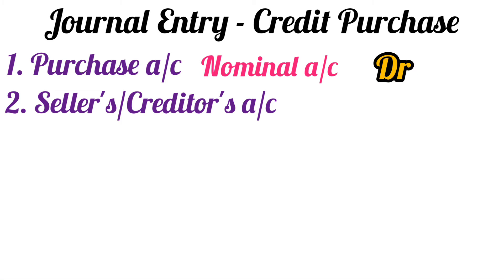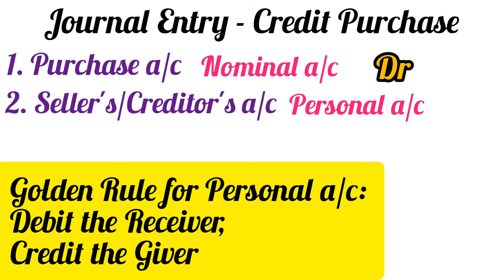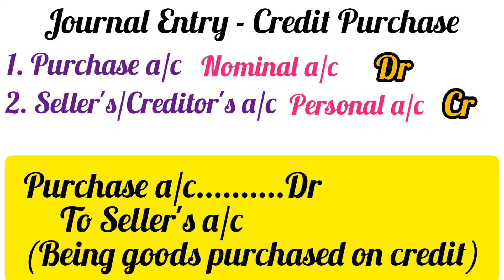The other account affected is the seller's account. The account of any seller is a personal account — for example, Mr. X's account. The golden rule for personal accounts says: debit the receiver, credit the giver. In this case, the seller is the giver — he is giving us the goods on credit and the benefit of credit — so the seller's account will be credited.